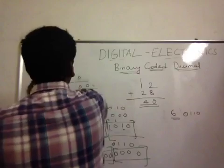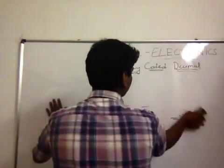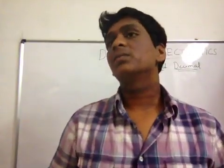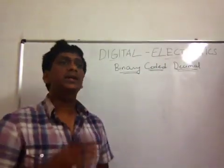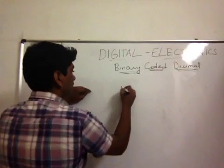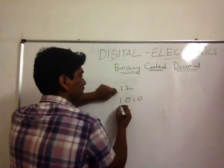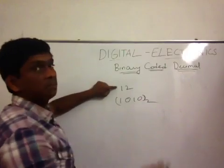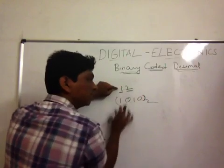Binary coded decimal is very different from your normal binary number. What actually happens when you are writing a binary number — if you are writing 1, you write it as 0001. If you are writing 12 in binary, that is 1100. In binary coded decimal, what you do is you write the binary for each and every digit individually.